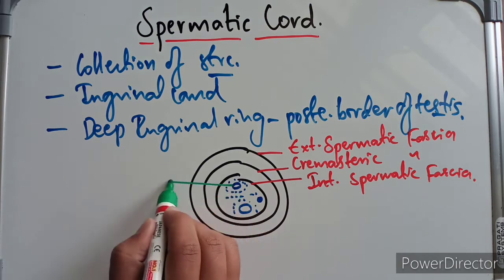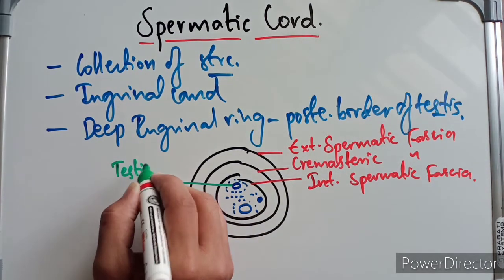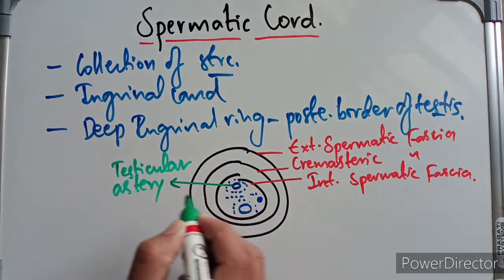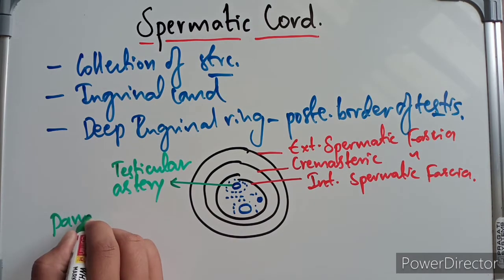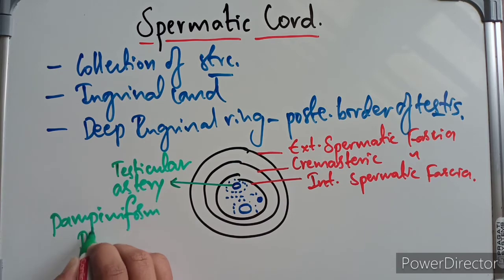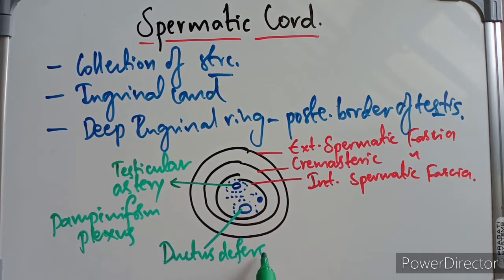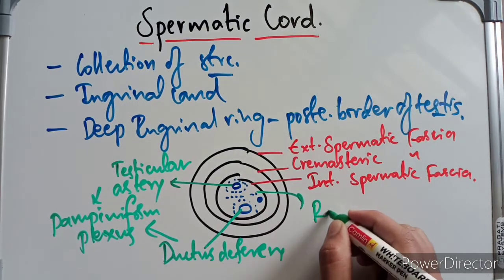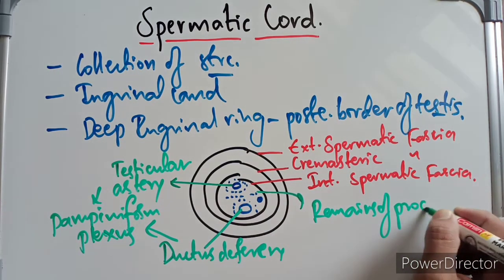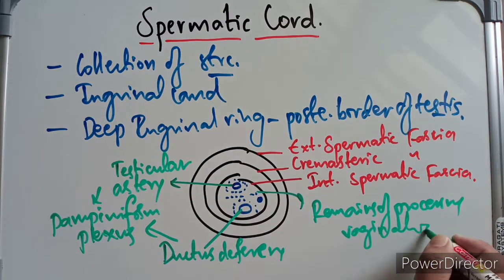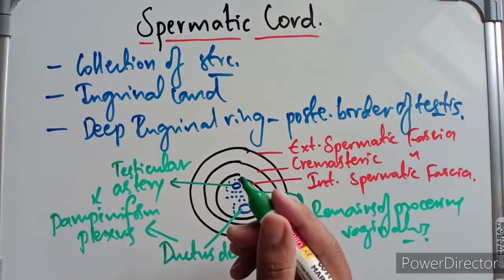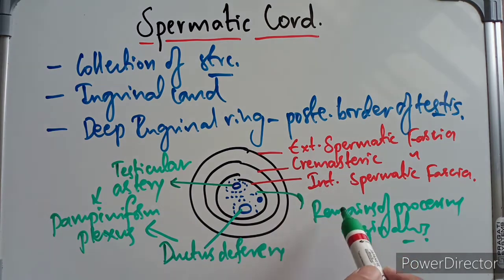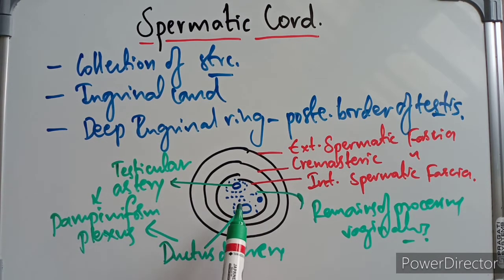After drawing three circles, draw two more circles inside. One represents the testicular artery, and around the testicular artery is the pampiniform plexus of veins. The other inner circle is the ductus deferens, around which we also have the pampiniform plexus of veins. And there are the remains of the processus vaginalis. This summarizes the transverse section of the spermatic cord showing its coverings and contents.